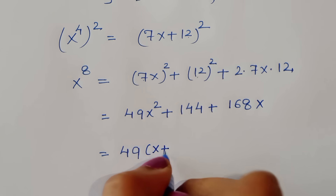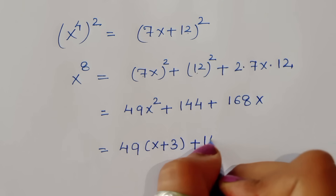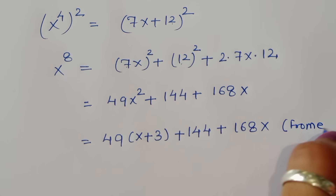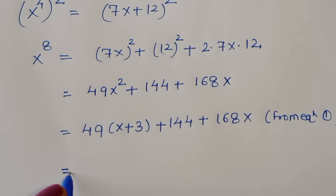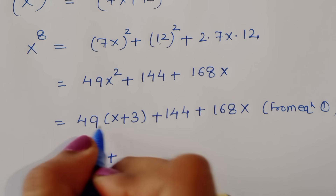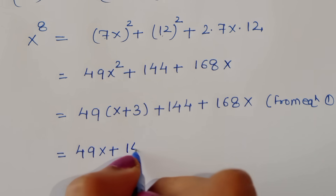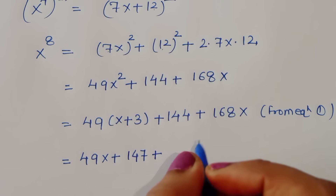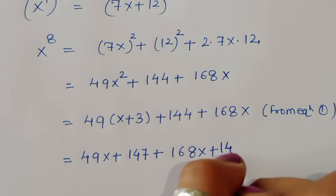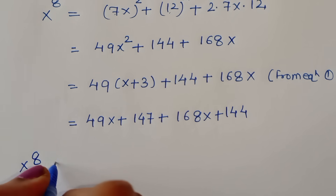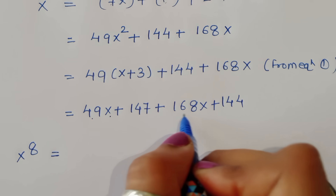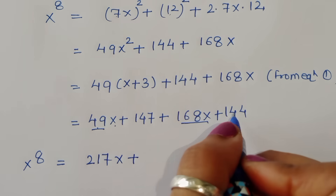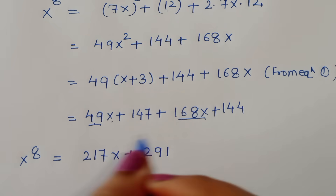Substituting x² = x + 3: x^8 = 49(x + 3) + 168x + 144 = 49x + 147 + 168x + 144. Adding like terms: x^8 = 217x + 291. This is the value of x^8.